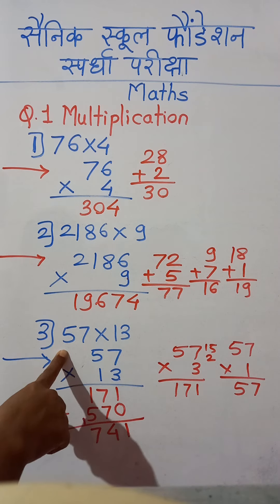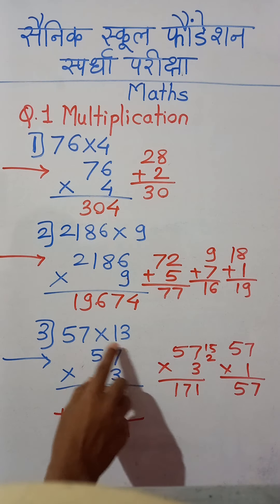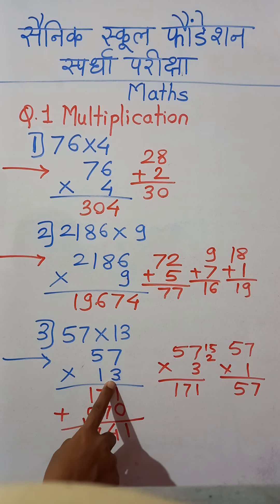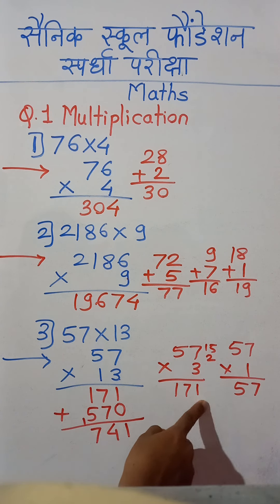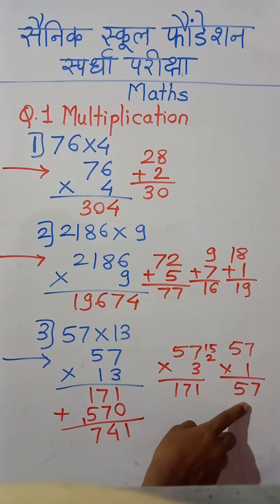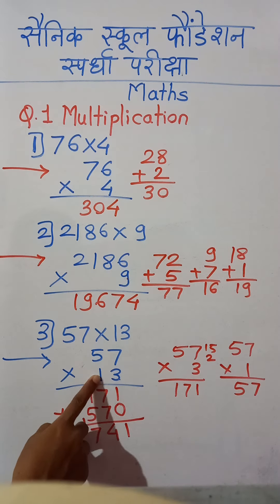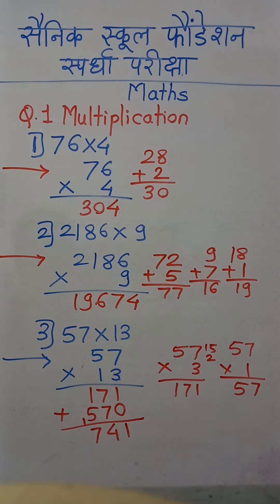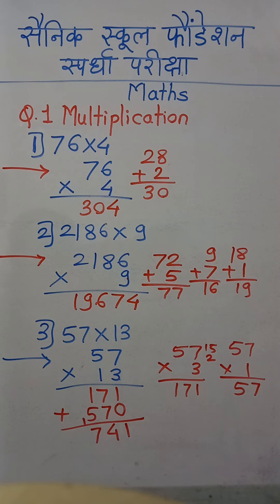Continuing the Marathi recap: In 57 multiplied by 13, the number 57 was first multiplied by units place digit 3, giving 171, written directly. Then 57 was multiplied by tens place digit 1, and before writing the answer 57, a 0 was placed at units place giving 570. After addition, the final multiplication answer is 741.